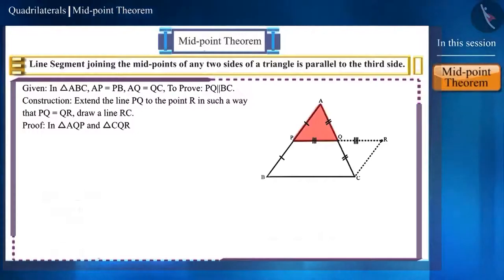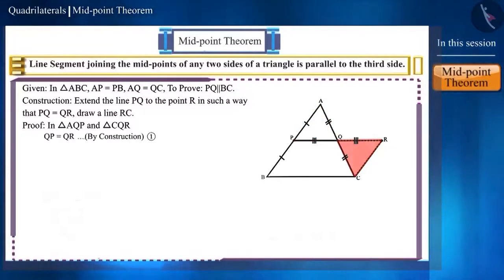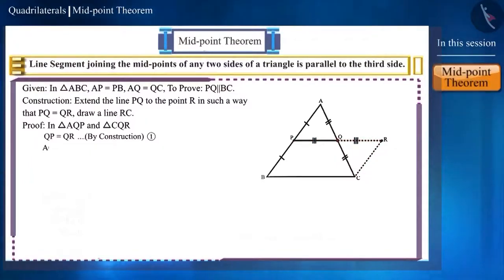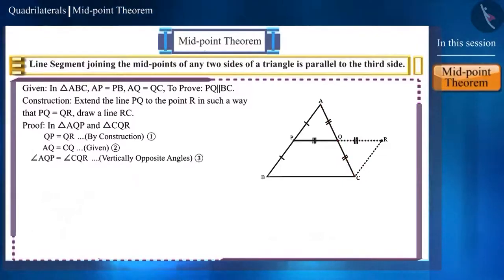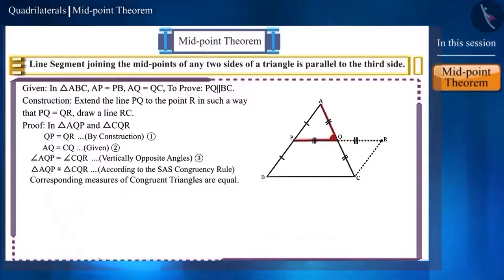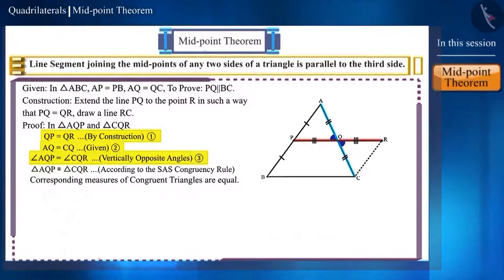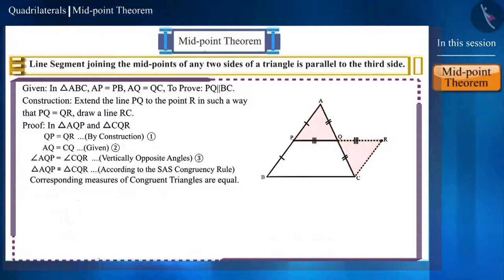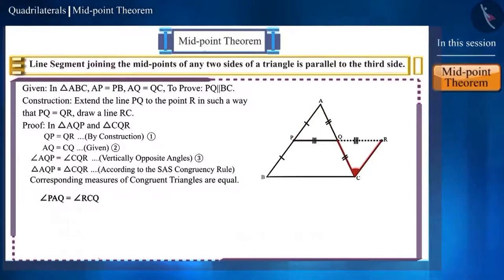Here we get two triangles: triangle AQP and triangle CQR. In this, the side PQ is equal to the side QR. We are given that point Q is the midpoint of the side AC, therefore the sides AQ and CQ will be equal. Angle AQP and angle CQR will be equal because these are vertically opposite angles. By equations 1, 2 and 3, these two triangles are congruent according to the SAS criteria. We know that corresponding measures of congruent triangles are equal, hence angle PAQ and angle RCQ will be equal, and these two sides will also be equal.